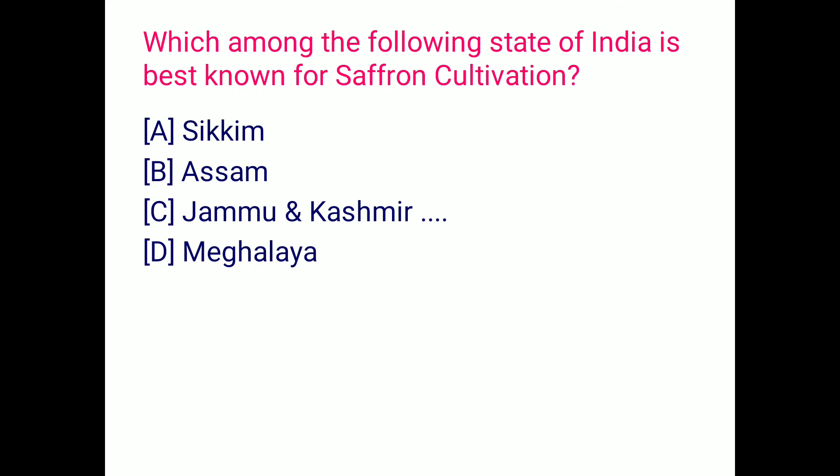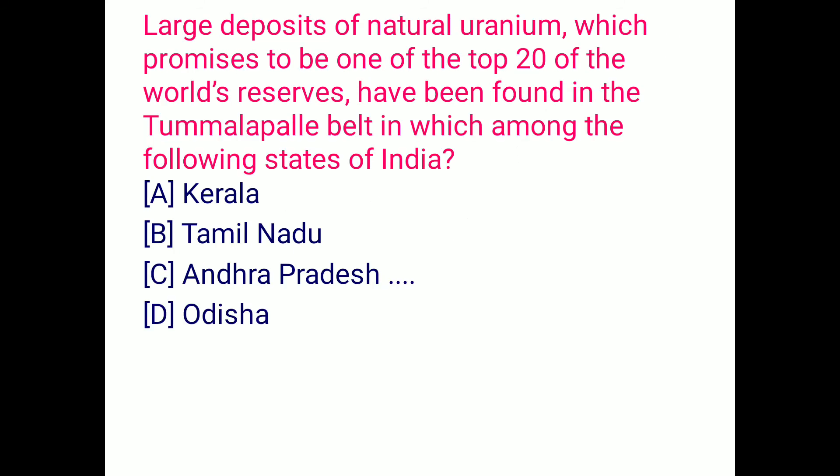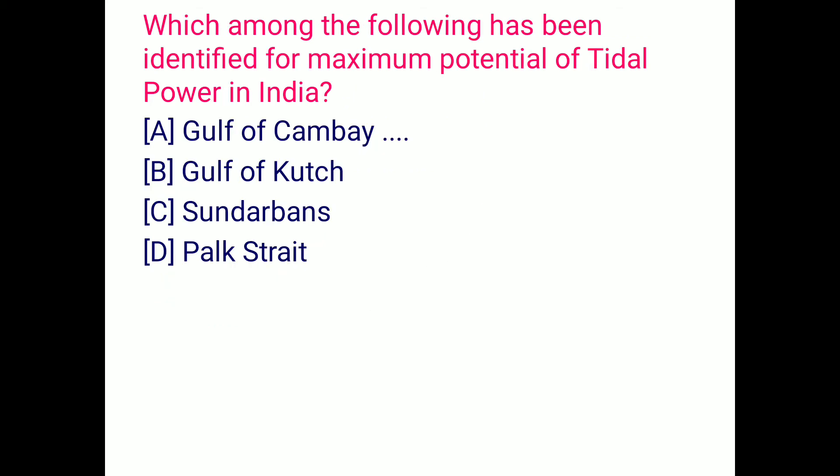Which among the following states of India is best known for saffron cultivation? That is Jammu and Kashmir. Large deposits of natural uranium, which promise to be one of the top 20 of the world's resources, have been found in the Tummalapalle belt, which is located in Andhra Pradesh.